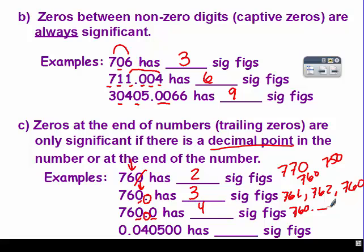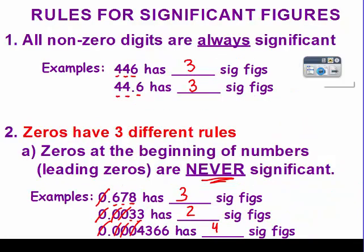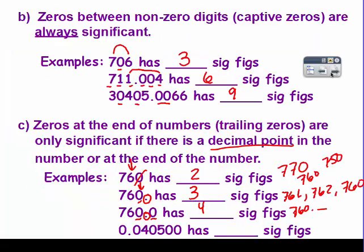The last example is the one that people have the biggest issue with, but remember: zeros at the beginning of numbers are never significant, so these beginning zeros do not count. This zero is captive, and these are at the end, but because there's a decimal, they count. So that's five significant figures.